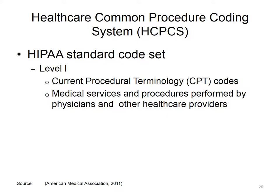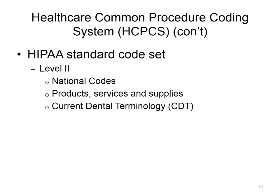The Healthcare Common Procedure Coding System, known as HCPCS, is another HIPAA standard code set commonly used in the outpatient setting — not only for reimbursement by healthcare providers and medical suppliers, but also for measuring quality of care and conducting research. It is composed of two levels. Level one is called the Current Procedural Terminology, or CPT codes, which contains codes for services and procedures that physicians and other healthcare providers perform, and is published by the American Medical Association. Level two codes, called national codes, identify medical supplies and products used — for example, portable oxygen tanks — and also include codes for services not included in CPT.